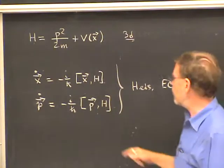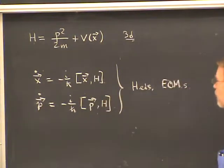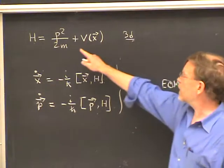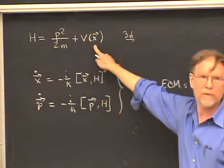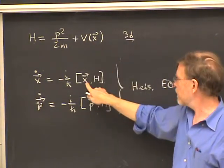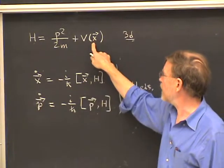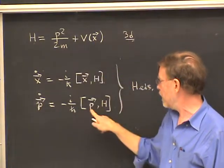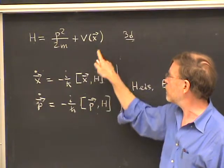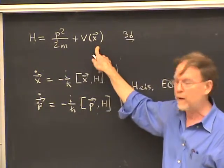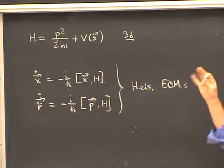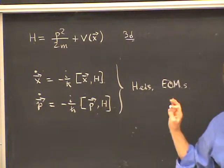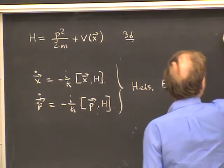In order to evaluate these commutators on the right-hand side — we need to do that to get the equations of motion explicitly — let's notice that the kinetic energy is a function only of the momentum, whereas the potential energy is a function only of the position. So the position operator commutes with the potential but not with the kinetic energy, and conversely, the momentum operator commutes with the kinetic energy but not with the potential.